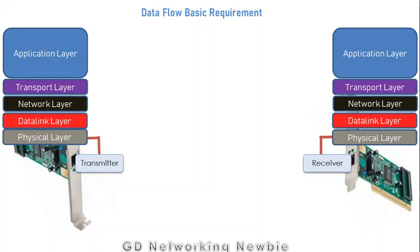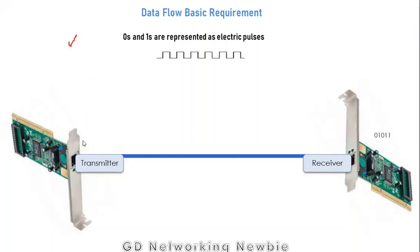As we discussed in the TCP/IP model, the user interacts with the application layer, and this application layer, by using the remaining layers, hands over that data to the physical layer. The physical layer uses this medium to transmit data from source to the destination. Data is in the form of zeros and ones, which are represented as electric pulses, and these electric pulses flow in the form of electric current.